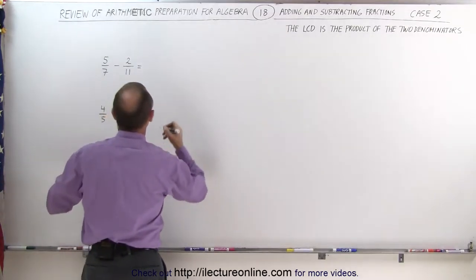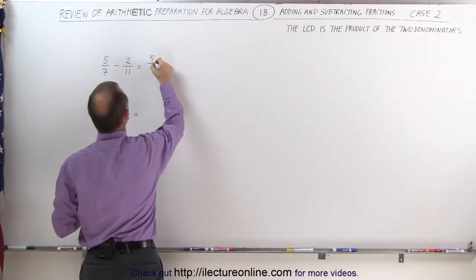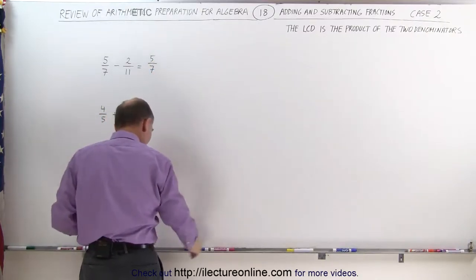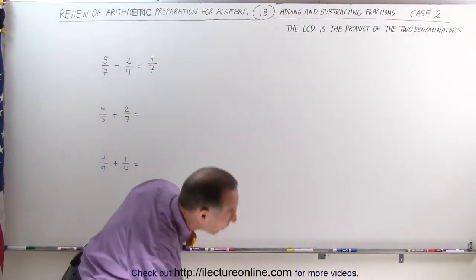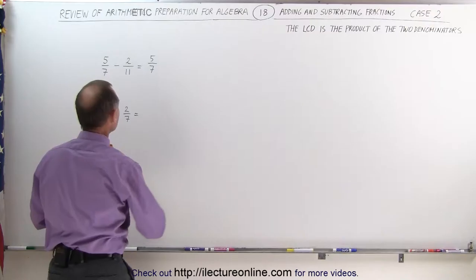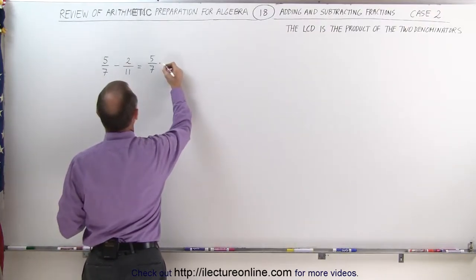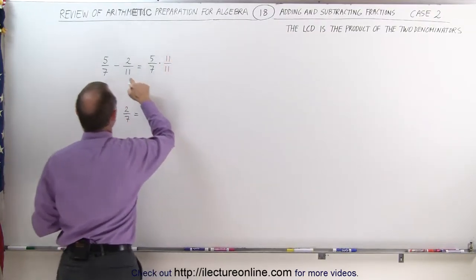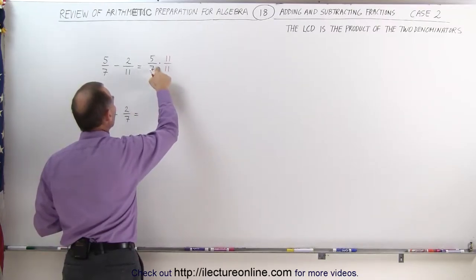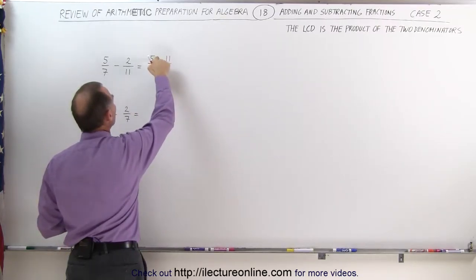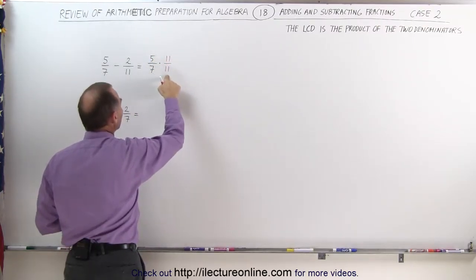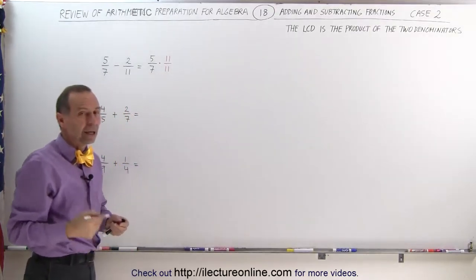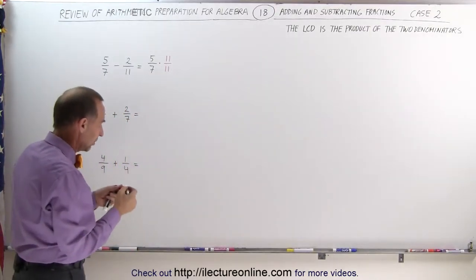This can be written as the fraction five over seven. We're going to multiply that fraction times eleven over eleven — we take the other denominator and multiply both the numerator and the denominator by eleven. Notice that seven times eleven will give us seventy-seven, which will be the common denominator.